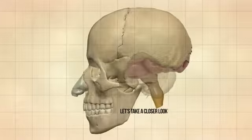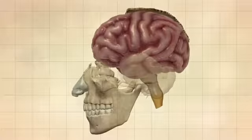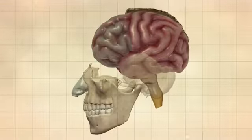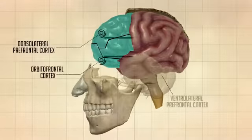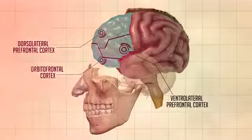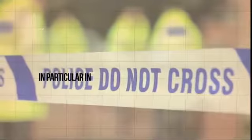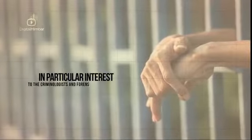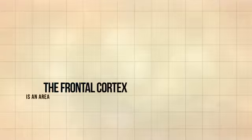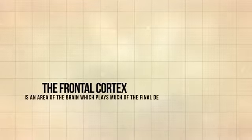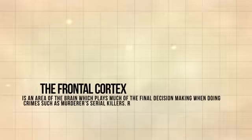The prefrontal cortex has been divided into three main subdivisions known as the dorsolateral prefrontal cortex, the orbitofrontal cortex, and the ventrolateral prefrontal cortex. In recent years, neuroscientists, criminologists, and forensic psychiatrists from around the world have carried out a number of studies on the human brain. Of particular interest has been the prefrontal cortex subdivisions, in which regions some have described wicked behaviour taking place — including final decision making in crimes such as murders, serial killings, rape, and robbery.